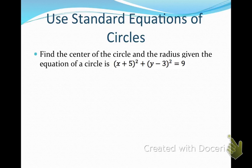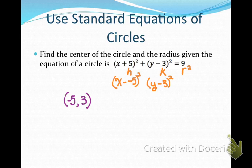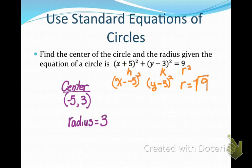The last thing is to work backwards — given an equation, find the center and radius. Remember: the number with x represents h, the number with y represents k, and the right-hand side is the radius squared. For example, if the equation has x plus 5, that really means x minus negative 5, so h equals negative 5. If it shows y minus 3, then k is 3. If the right side is 9, take the square root to get radius 3. So the center is (negative 5, 3) and radius is 3.